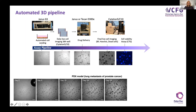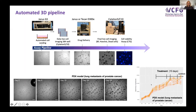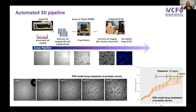We can now see growth over time — structures are clearly growing. We can map that out, treat them, and see controls continuing to grow while treated cells start to die off. Doing this label-free and imaging every day lets us map growth and work out exactly when is the right time to treat. If you just look by eye, you might say 'the bigger the better,' but in fact bigger structures see less growth and are less likely to take up drugs in an active growth phase.